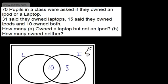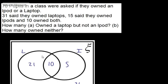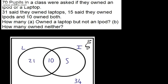Let's fill in the next bit of information. We know 31 owned a laptop. 10 of them are already in the intersection, so that must leave 21 in the laptop-only section. So we've got 21, 10, and 5 — giving a total of 36 inside the circles. Therefore, those who owned neither will be outside.